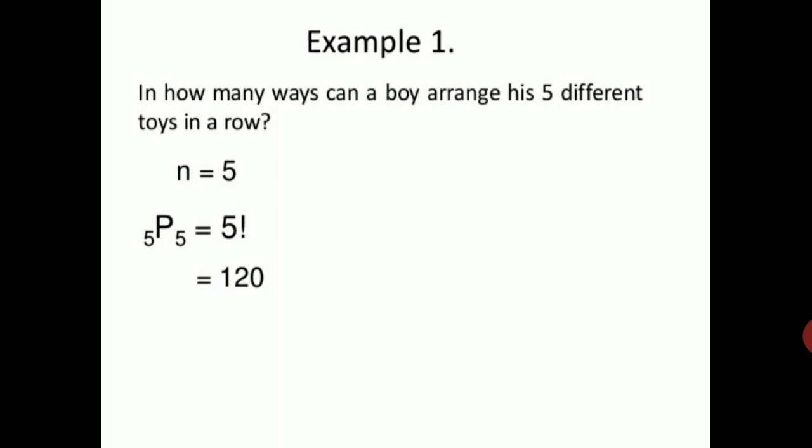One example: In how many ways can a boy arrange his five different toys in a row? Five toys in a row means n equals 5, taken 5 at a time. The answer is 5 factorial, which is equal to 120.